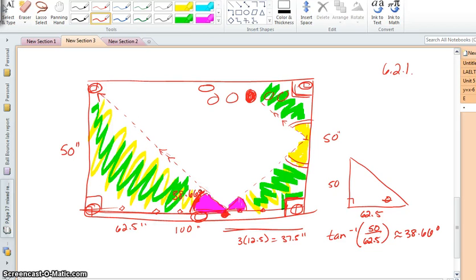Which makes this other angle 90 minus 38.66 or 51.34 degrees. And we can make our way around the table entering angle measures simply by using the fact that the sum of any three angles of a triangle has to be 180 degrees.